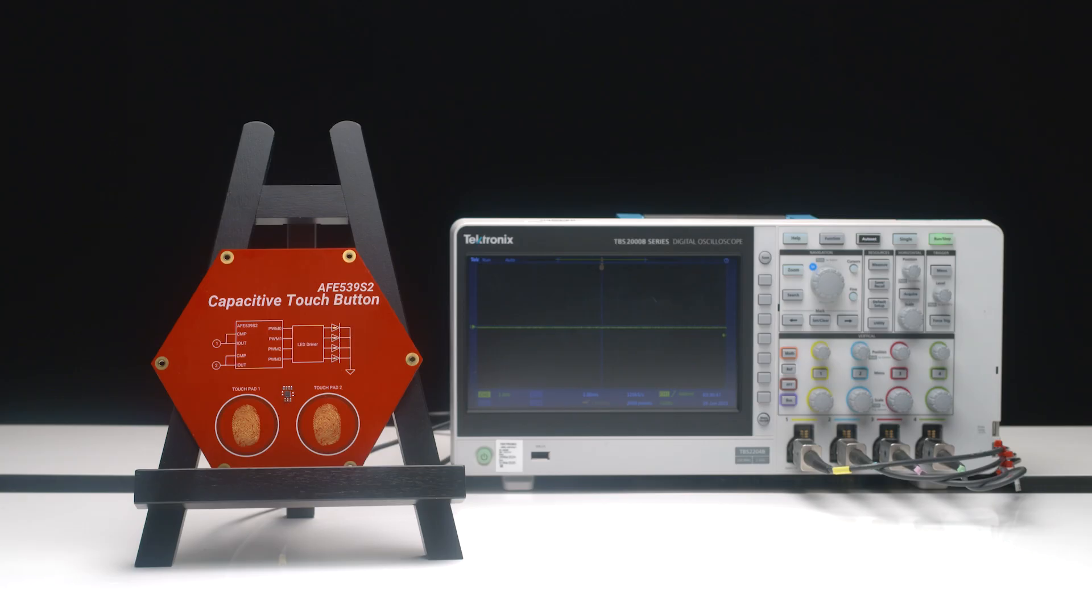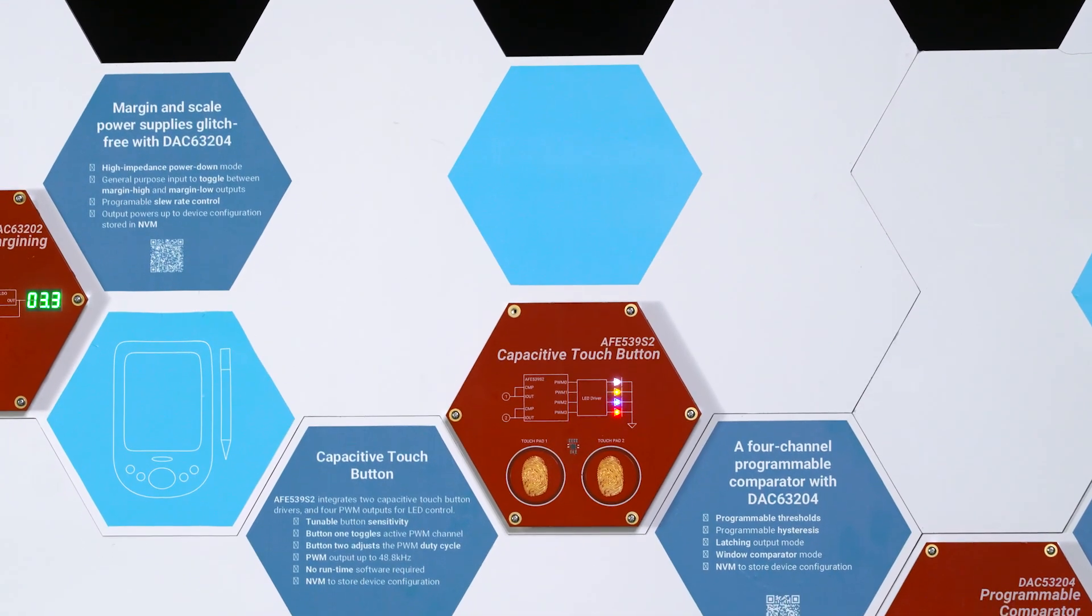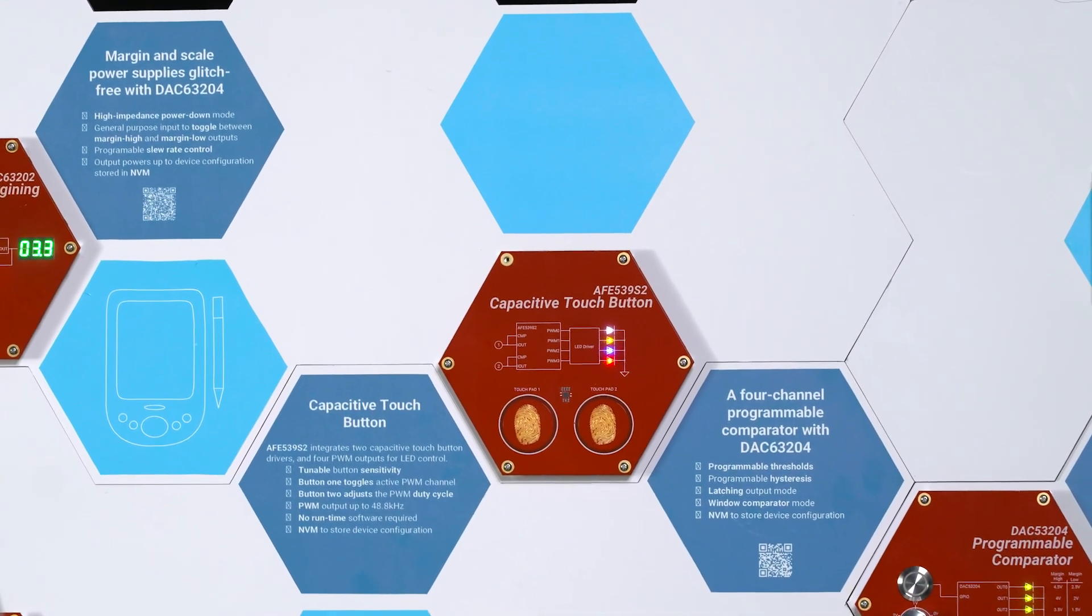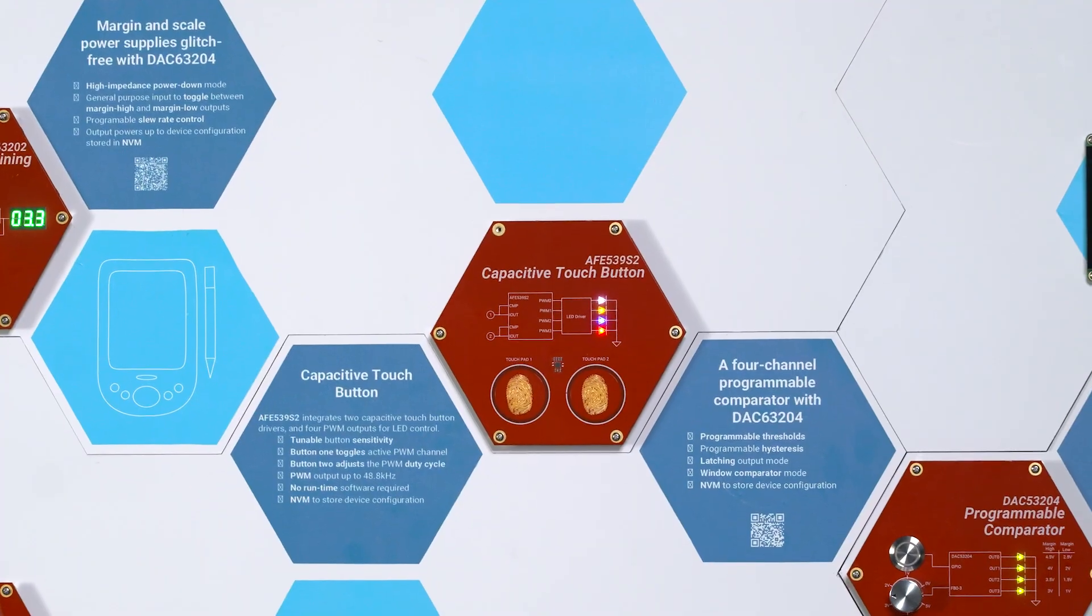The device operates by constantly charging the plate and measuring the voltage on the plate with a programmable comparator. Once the plate is touched, parasitic capacitance is added to the system, formed by the finger, the plate, and dielectric air between them. A touch is detected when the voltage on the plate sensed by a programmable comparator is less than a programmed threshold voltage.